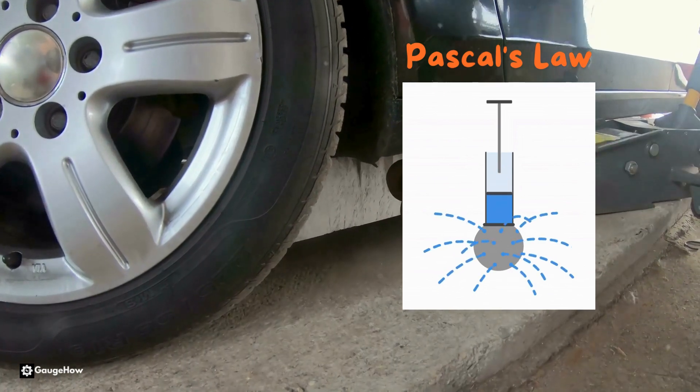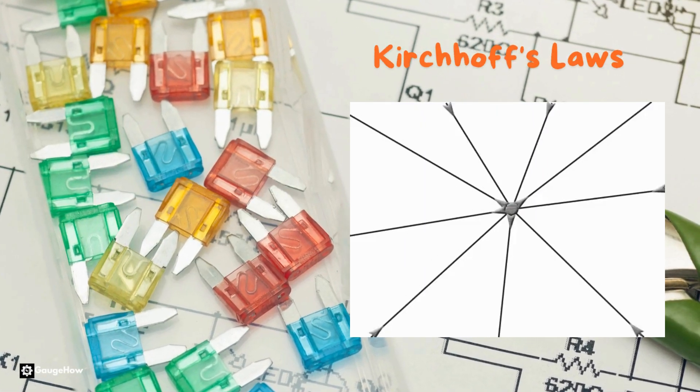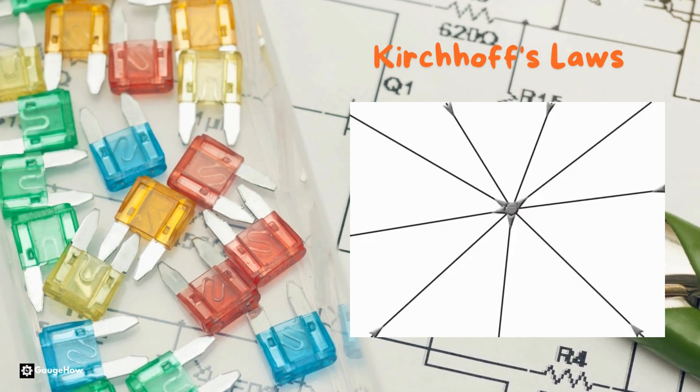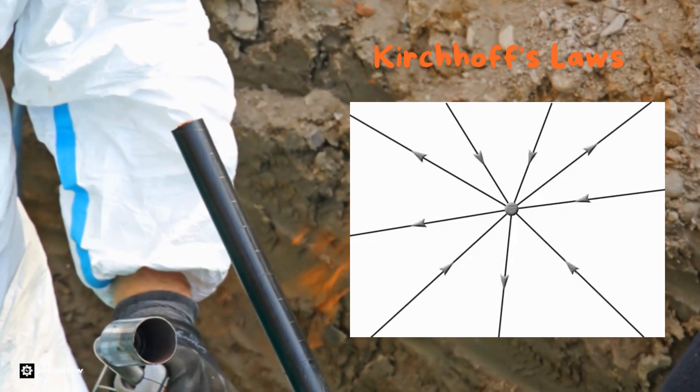Sixth, Kirchhoff's laws. In any closed circuit, the total voltage around the loop equals zero. Essential for circuit analysis.